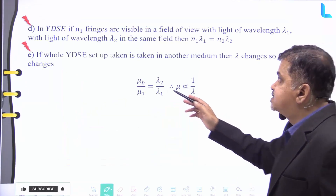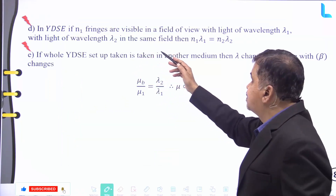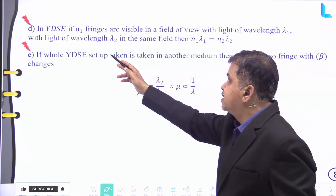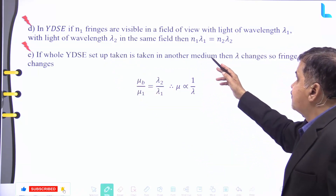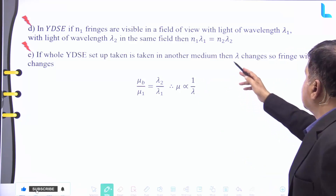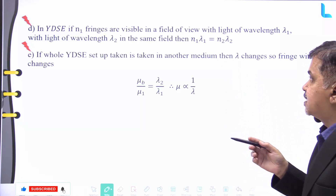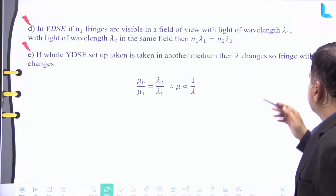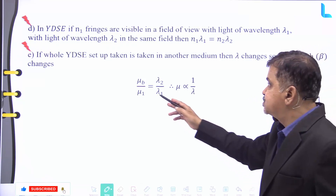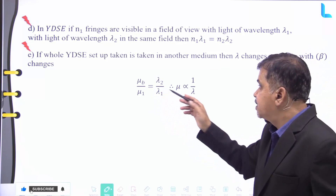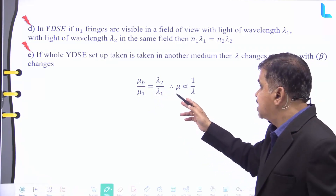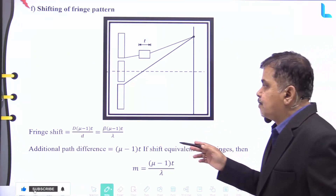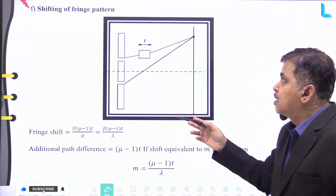In YDSE, if n1 fringes are visible with light of wavelength λ1 and n2 fringes with wavelength λ2 in the same field of view, then n1λ1 = n2λ2. If the same setup is taken in another medium, then λ changes and fringe width β also changes. In this case: μ₂/μ₁ = λ₁/λ₂, so μ is inversely proportional to λ.